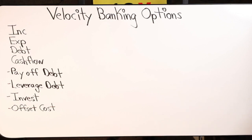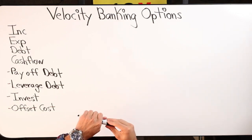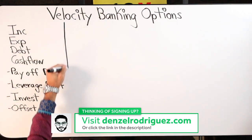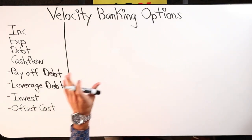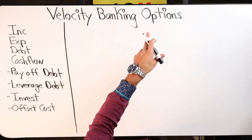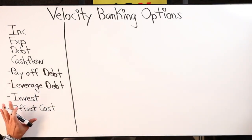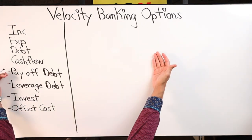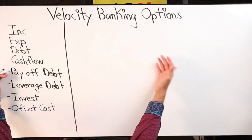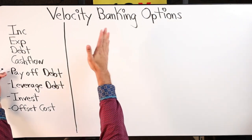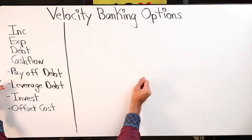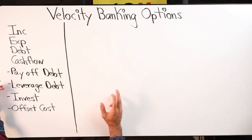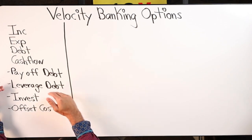Let's dive in and split this up into different categories. We're going to go over the different velocity banking options — the different ways you can use velocity banking. I've laid them out right here. Velocity banking can be used to pay off debt, specifically bad debt or any debt. It can also be used to leverage debt.